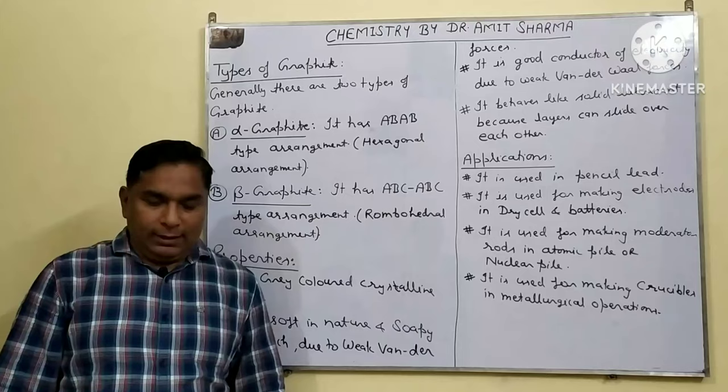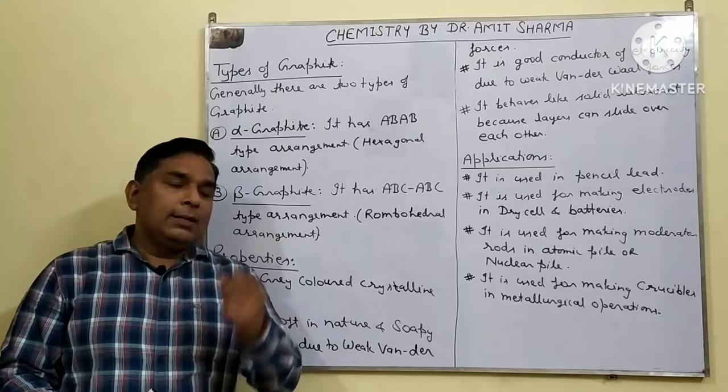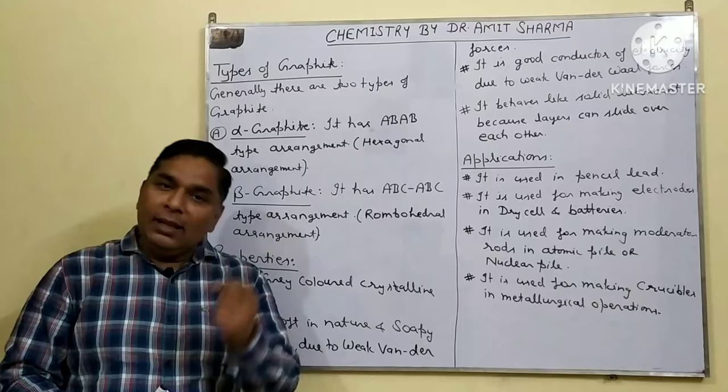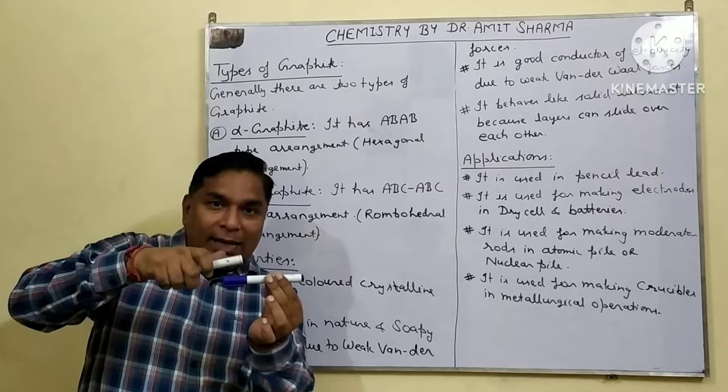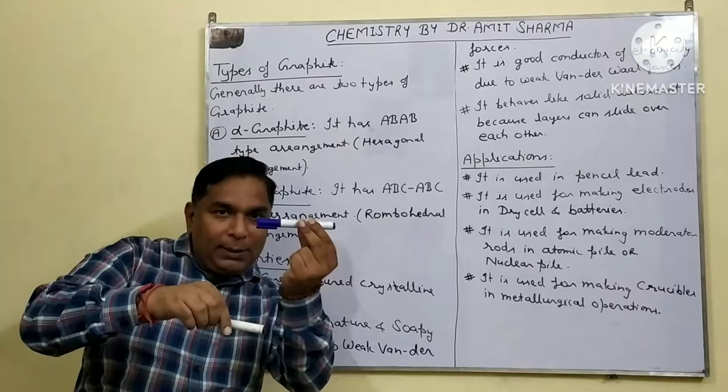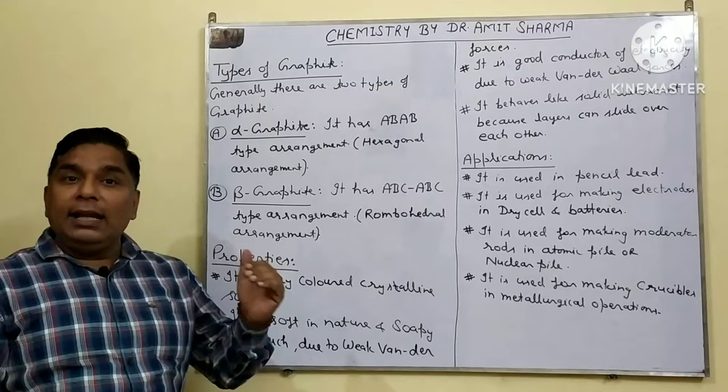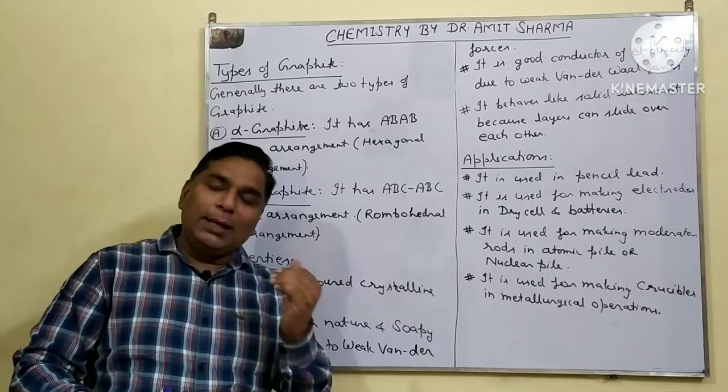There are generally two types of graphite found in nature. First is alpha graphite, which has a hexagonal arrangement with an ABAB type layer pattern — the first and third layers are identical. Second is beta graphite, which has a rhombohedral arrangement with an ABCABC type layer pattern.